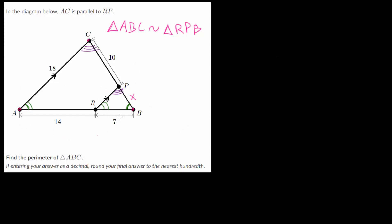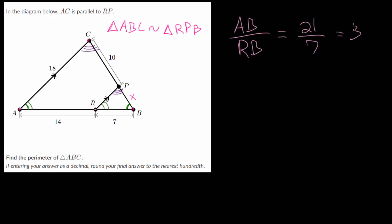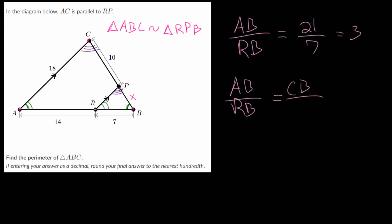Let's look at the ratio of the bottom sides: AB divided by RB. Since AB is really AR plus RB — that's 14 plus 7, which is 21 — divided by RB, which is 7, this equals 3. So the proportionality constant is 3, meaning we multiply all side lengths of the smaller triangle by 3 to get the bigger triangle. We can set this equal to the ratio of CB divided by PB, the sides on the right.